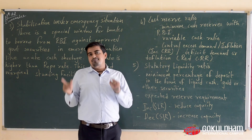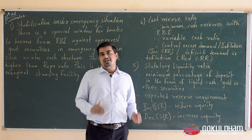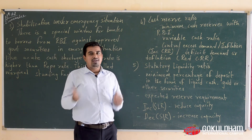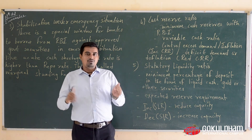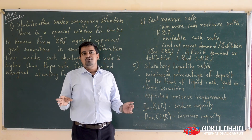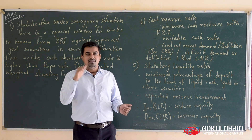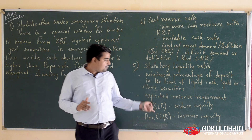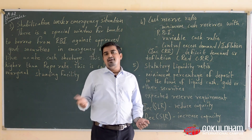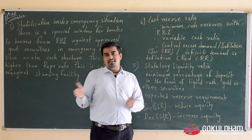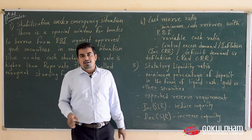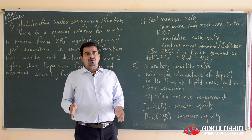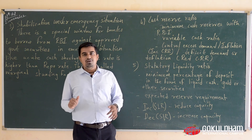SLR और bank के credit creation के बीच direct connection है — अगर SLR rate बढ़ाया जाए तो bank की loan create करने की capacity और supply of money पर खराब असर पड़ता है, वो capacity घट जाती है; जबकि अगर SLR rate decrease हो तो bank की loan create करने की capacity बढ़ जाती है और वो money supply भी ज़्यादा कर पाएंगे। These are the quantitative measures of monetary policy through which credit creation and supply of money in the economy is controlled. Thank you.